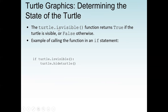Another example is the isvisible() function, which returns true if the turtle is visible, otherwise false. For example: if turtle.isvisible() is true — meaning we can see it — we want to hide it, so we call turtle.hideturtle().